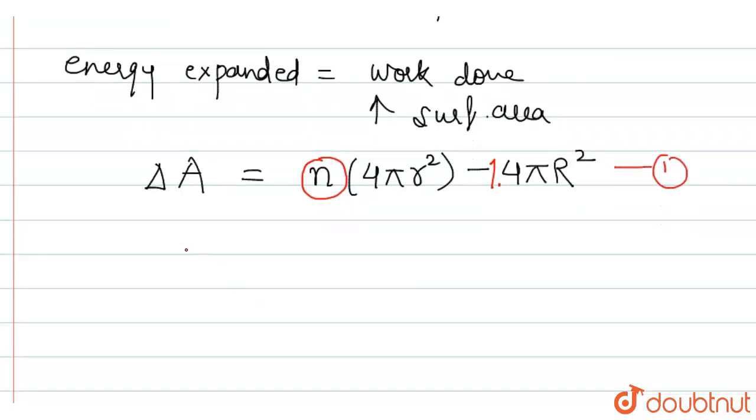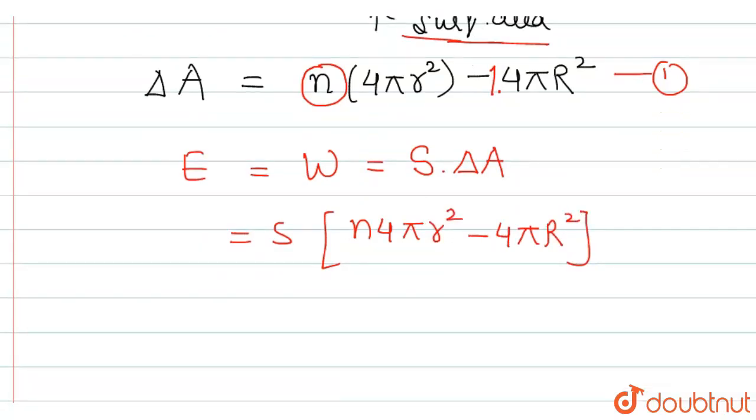Now, the energy is equal to the work done against increasing the surface area and this work done is equal to the surface tension into the change in area. We can take for change in area this expression equation number 1. We can take from here 4 pi common. This is S into 4 pi within bracket n r square minus capital R square.